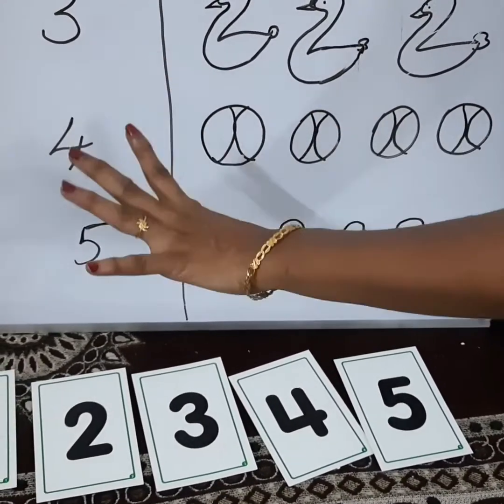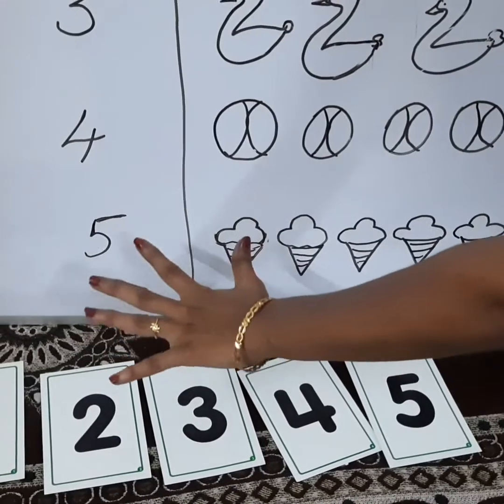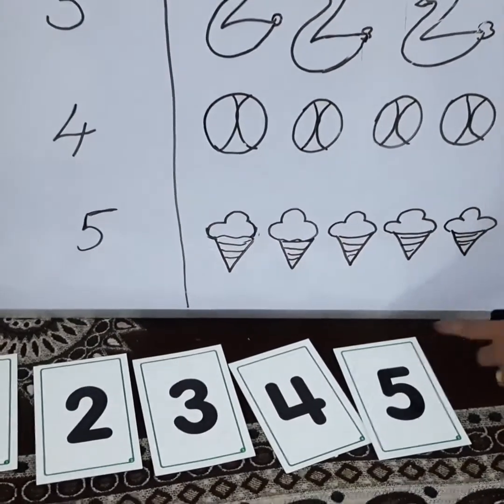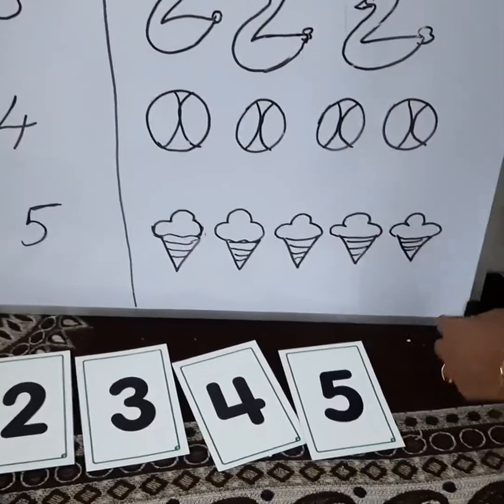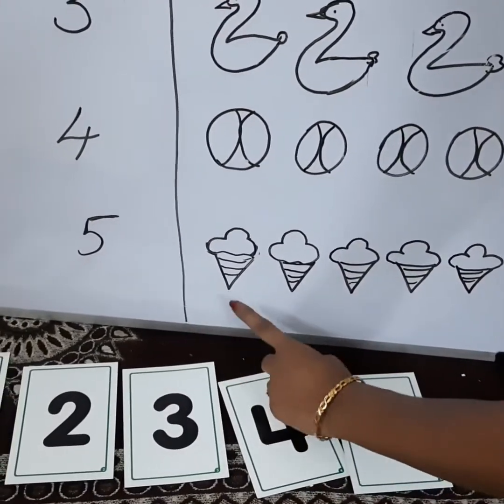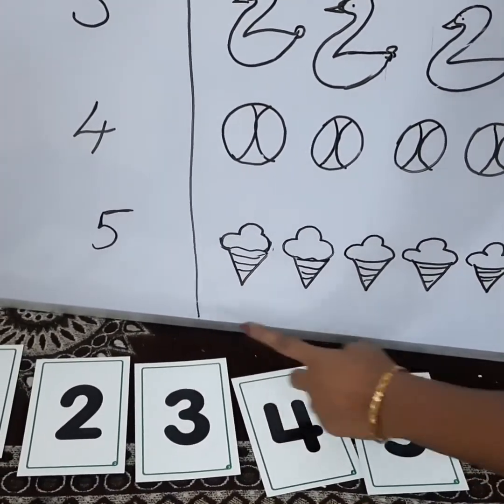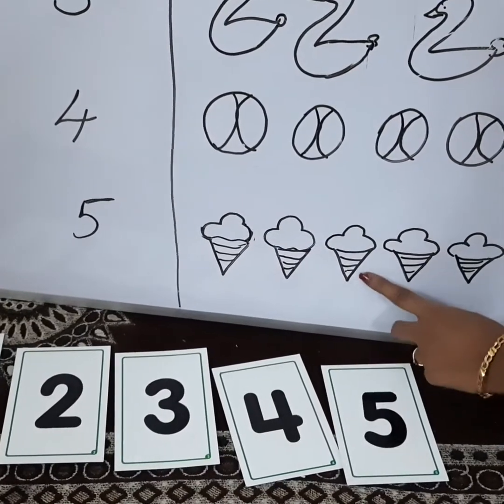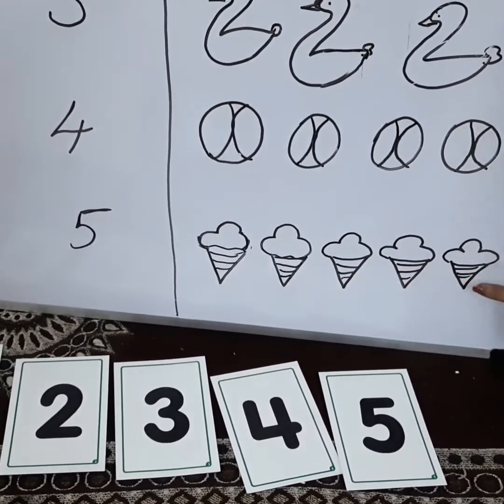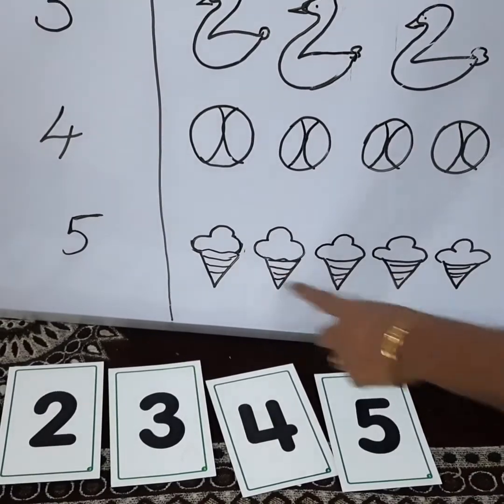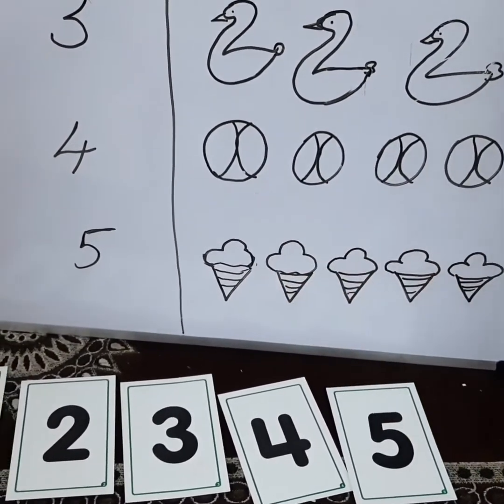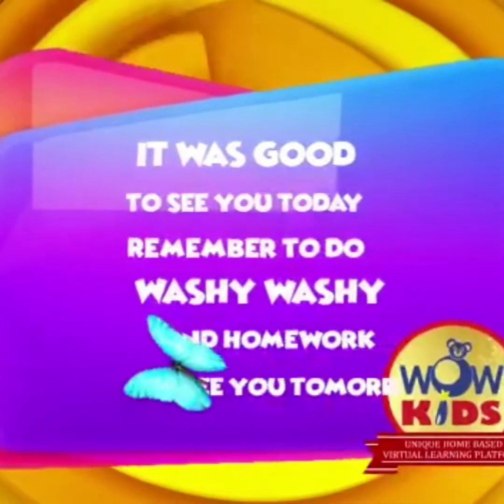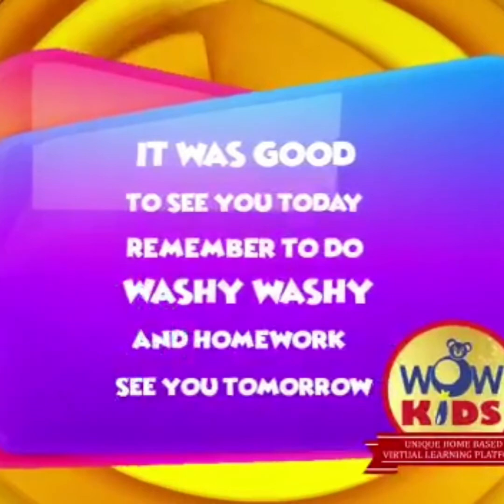Next to 4, it is 5. What is here? Wow! Ice creams are here. We will count how many ice creams are there. Come on babies. 1, 2, 3, 4 and 5. So, we have total 5 ice creams. Yes! Like this.